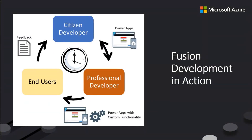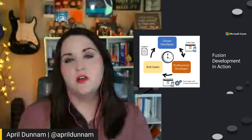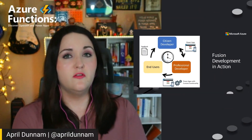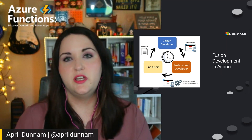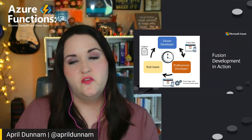Here's how this works in action: a citizen developer can build a front end in Power Apps the way they want to interact with the application. They send that off to a pro dev. They can talk back and forth — the pro dev can add custom functionality, whether it's integrating with external or internal services and APIs, or adding additional functionality like custom controls. The end user — who is often the citizen dev themselves — can be involved in that feedback loop. It's a really collaborative process to make application development faster.